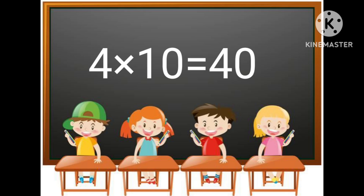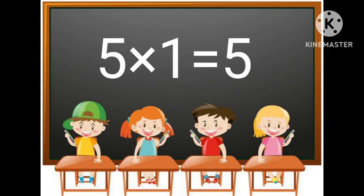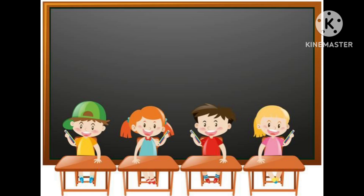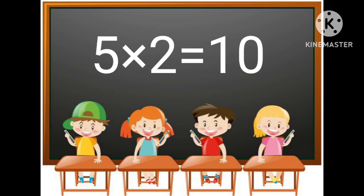4 multiplied by 10 is equal to 40. 5 multiplied by 1 is equal to 5. 5 multiplied by 2 is equal to 10.